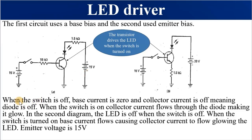When the switch is off, base current is zero and collector current is off, meaning the diode is off and does not emit light. When the switch is on, collector current flows through the diode, making it glow. In this diagram, the LED is off when the switch is off, and when the switch is turned on, we will have base current flowing, causing collector current to flow, thus making the light emitting diode glow.